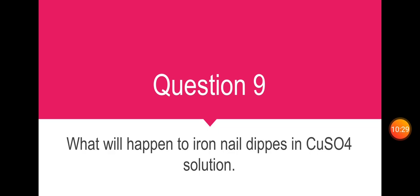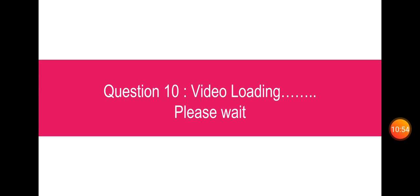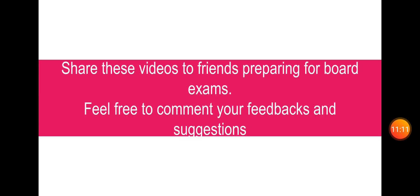Question number 9: what will happen to an iron nail dipped in copper sulfate solution? Iron is more reactive than copper, so the more reactive element displaces the less reactive one. Displacement reaction: Fe plus CuSO4 giving FeSO4 plus Cu. CuSO4 is blue colored; FeSO4 is green colored.